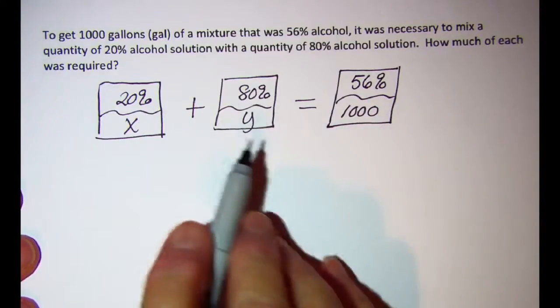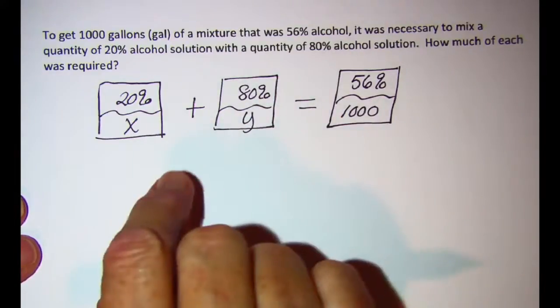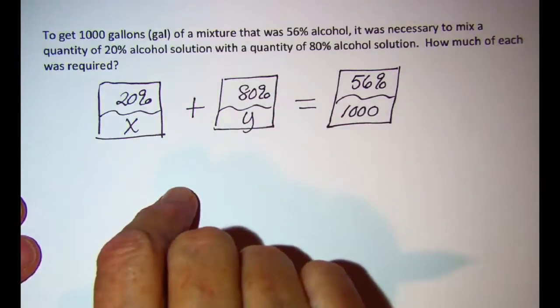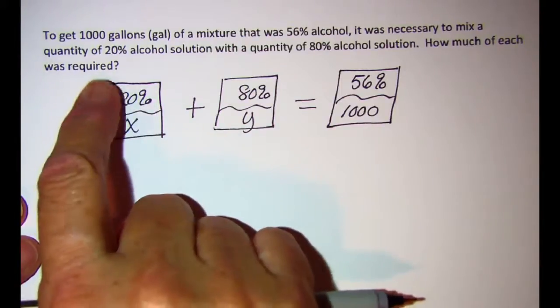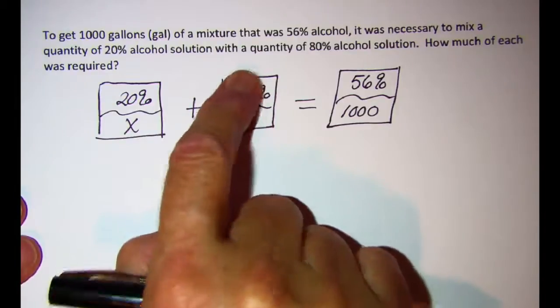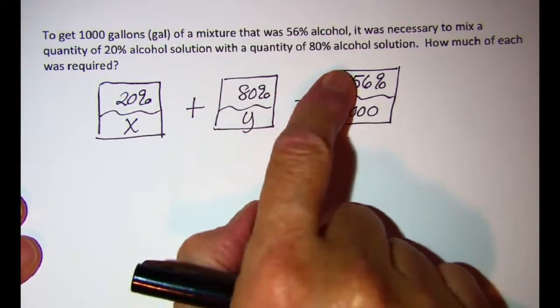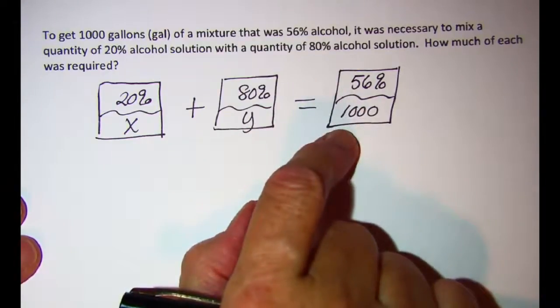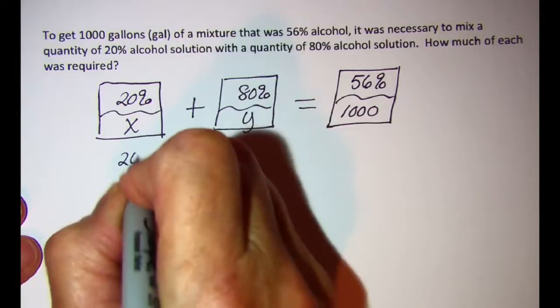Now once I have everything filled out in my graphic organizer, then I'm going to get two equations from this. One equation comes from multiplying 20% times x plus 80% times y equals 56% times a thousand. So that's one of the equations.